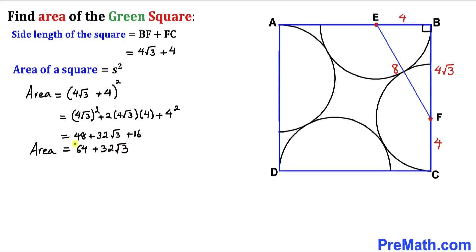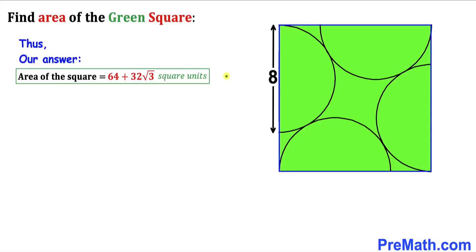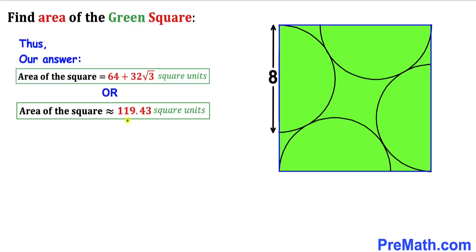So the area of this green square turns out to be 64 + 32√3, which is approximately equal to 119.43 square units.